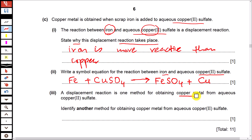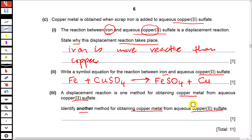Identify another method for obtaining copper metal from aqueous copper(II) sulfate. The other method is electrolysis, in which copper(II) sulfate is used as the electrolyte, electricity is passed through it, and copper metal is deposited at the cathode.